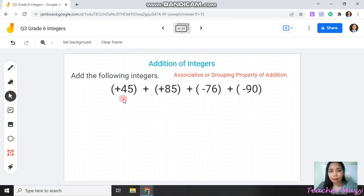For this example, we have positive 45 plus positive 85 plus negative 76 plus negative 90. These integers have unlike signs. To add the following integers, we may use the associative or the grouping property of addition.